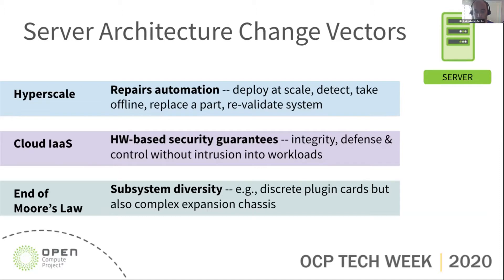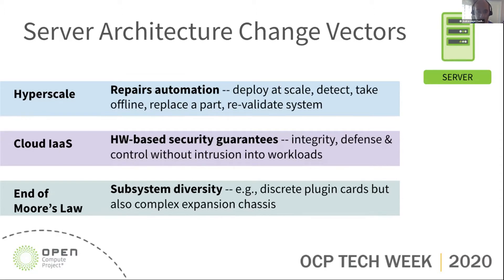It doesn't help to send people to machines, so we need to be very adamant about automation. We are a cloud provider, so when it comes to security we need to isolate very clearly from customers — both internal and external — due to the large number of Alphabet properties that we support. And because of the end of Moore's Law, we need to support CPUs and memory like classic computers, but also much more diverse subsystems including all kinds of accelerators and offloads.